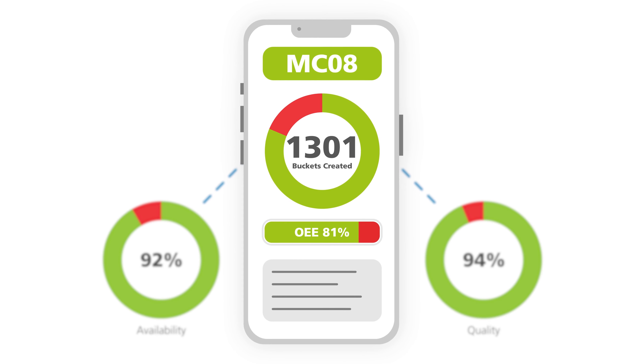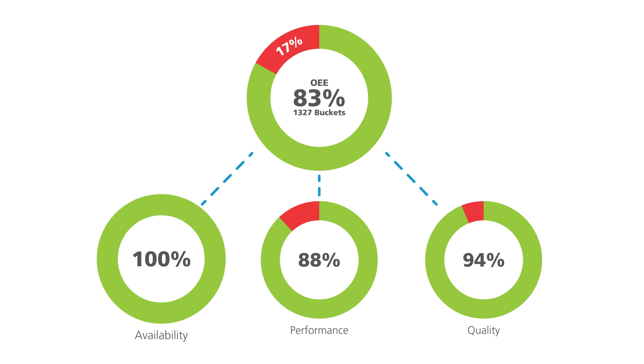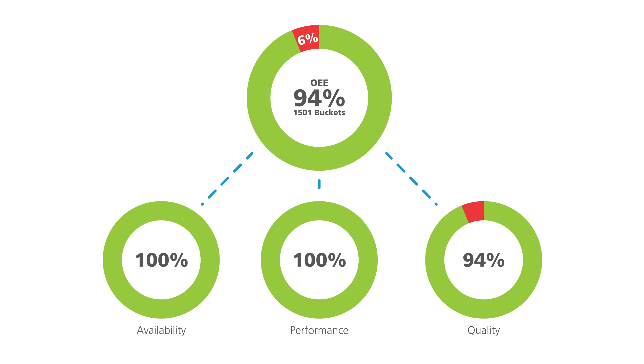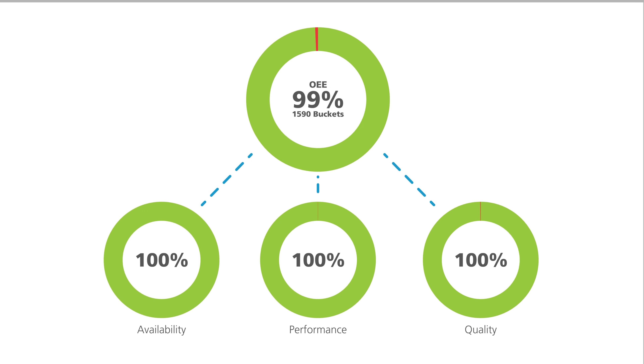An OEE figure of 100% means that your process is operating all the time, creating parts at the intended rate and producing only good parts.